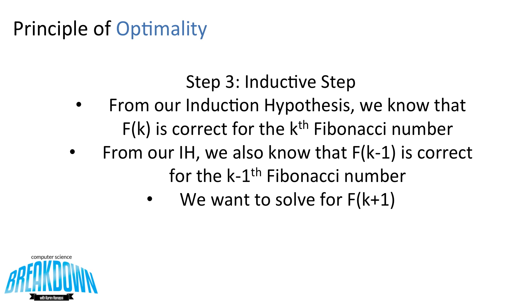Now, let's do our inductive step. From our inductive hypothesis, we know that F at K is correct for the Kth Fibonacci number. From our induction hypothesis, we also know that F of K minus 1 is correct for the K minus 1th Fibonacci number, because K minus 1 is less than N. And we've stated in our induction hypothesis that it is true for all K less than or equal to N.